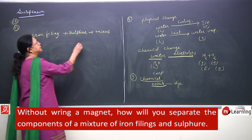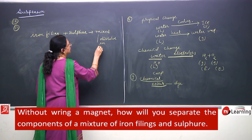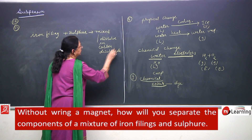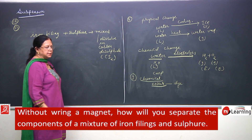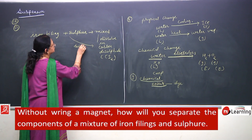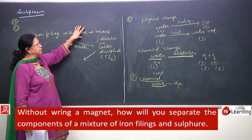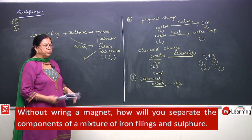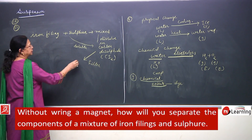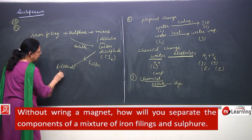You will dissolve this mixture in carbon disulphide — chemical formula CS₂. This is a liquid in which sulphur is soluble; sulphur dissolves in it. Now you have a mixture of iron filings and sulphur dissolved in carbon disulphide. You will then filter it. The filtrate will contain sulphur dissolved in carbon disulphide.